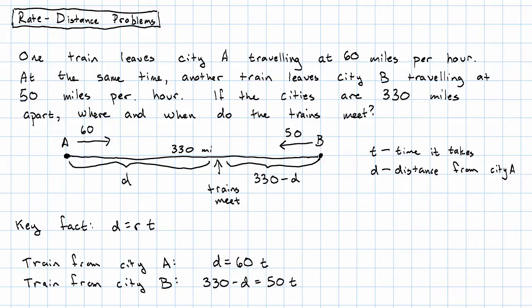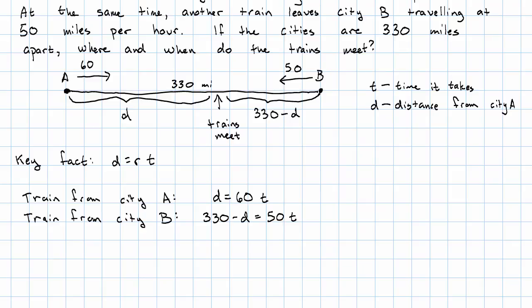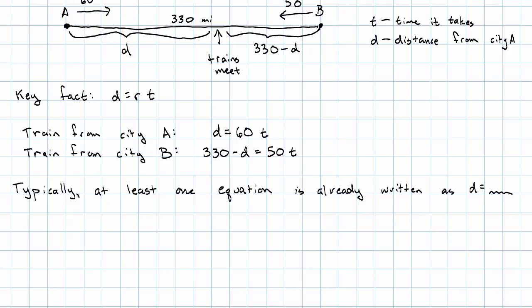In other problems, they might travel for different amounts of time, because different amounts of time might be given. These problems tend to give us a system that is well set up for substitution. What do I mean by well set up for substitution? I mean, typically, at least one of our equations is already written in the form D equals something with a T in it.